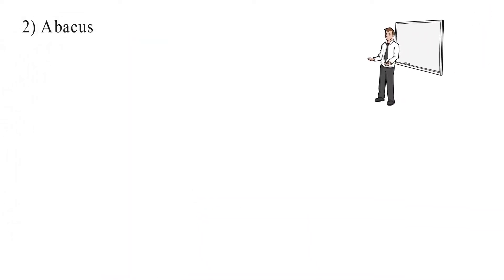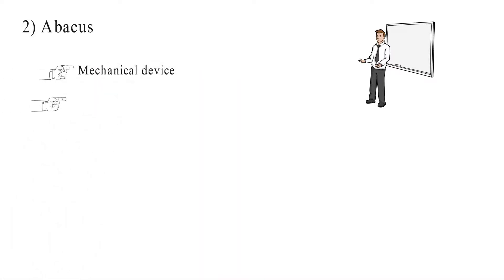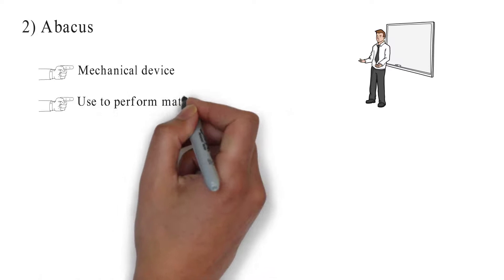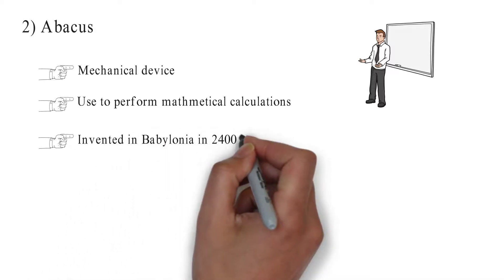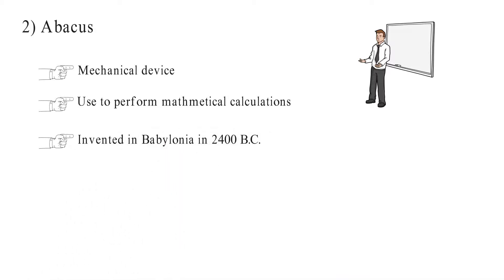Number 2: Abacus. An abacus is a mathematical device used for individuals to perform mathematical calculations. Abacus was invented in Babylonia in 2400 BC.